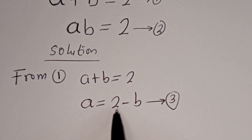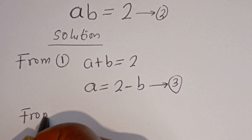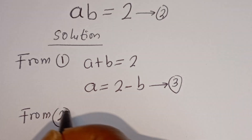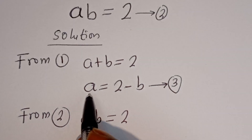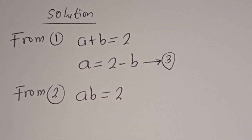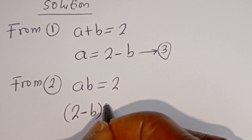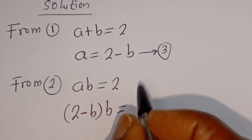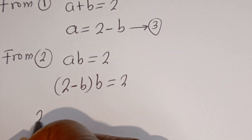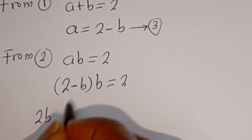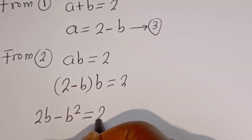Now let's substitute for A in equation 2. From equation 2, AB is equal to 2. When A is equal to 2 minus B, we have (2 minus B) times B is equal to 2. Let's open the bracket: 2 multiplied by B is 2B, minus B multiplied by B is minus B squared, so 2B minus B squared is equal to 2.